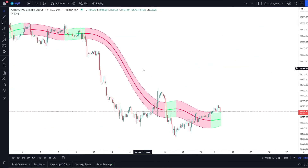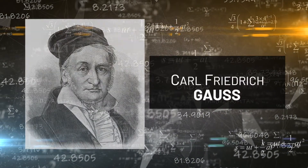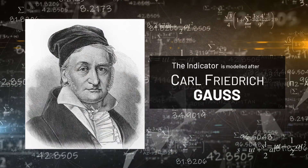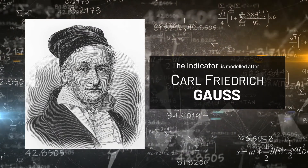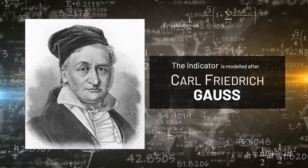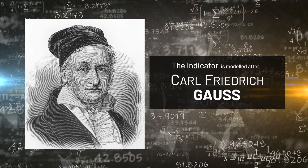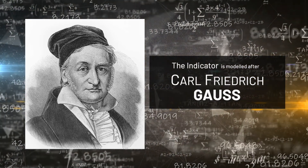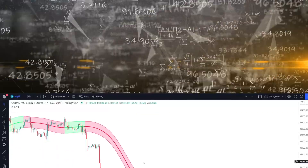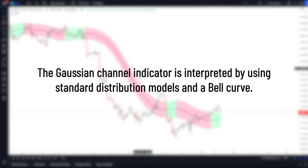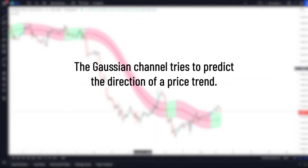Let's go over a few things about the Gaussian channel that give it its strong reliability. It is an indicator modeled after Carl Friedrich Gauss, one of the greatest mathematicians of all time. Gauss did not have access to modern statistical software, but his statistical models have proved extremely powerful in interpreting price movements in markets. The Gaussian channel indicator is interpreted using standard distribution models and a bell curve, and it also tries to predict the direction of a price trend.